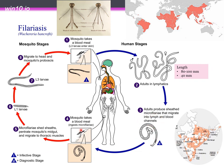The microfilariae migrate to the mosquito's midgut, where they develop into L1 larvae, which then transform into L2 and then L3 larvae. The L3 larvae are then transmitted through the mosquito's proboscis when it bites a new host.